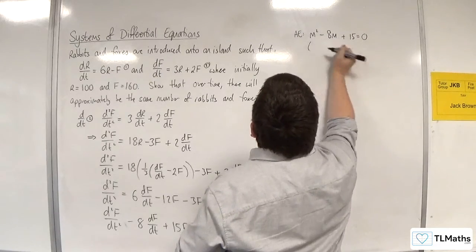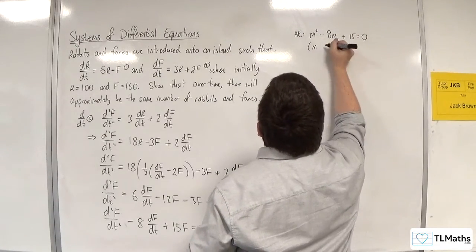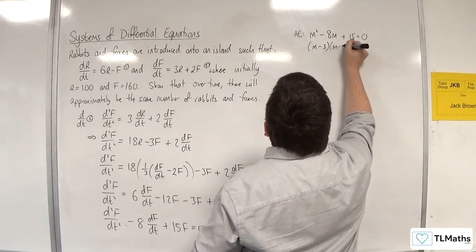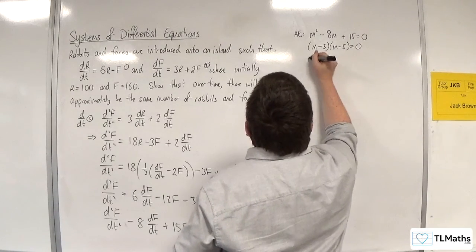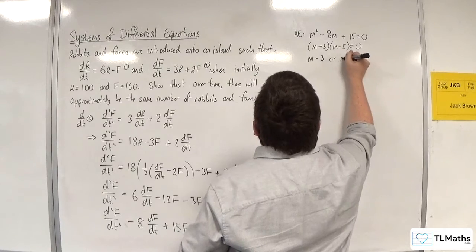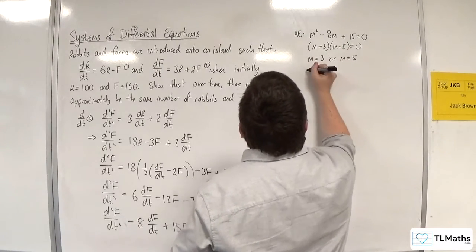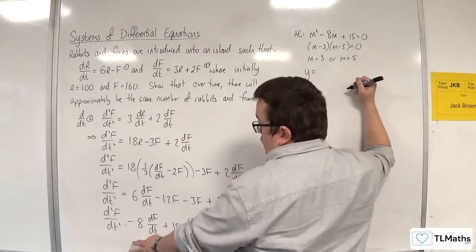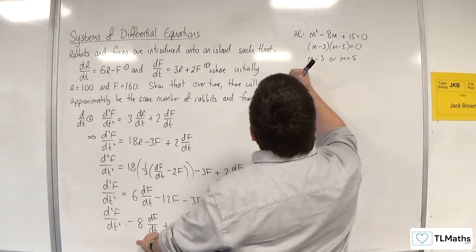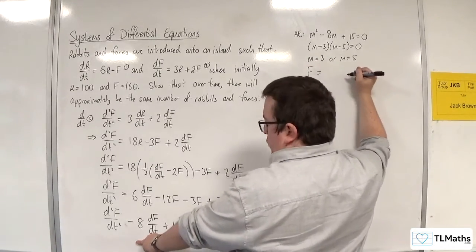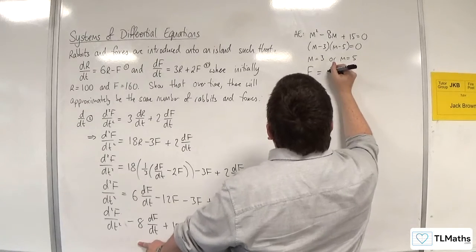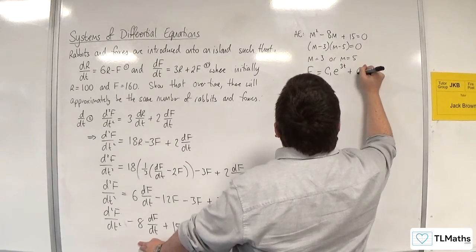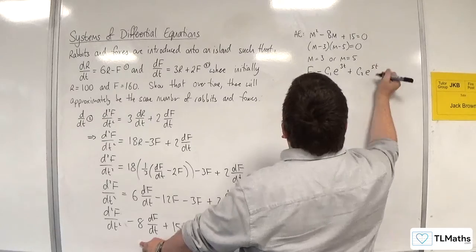The auxiliary equation factorises as (m - 3)(m - 5) = 0, giving m = 3 or m = 5. So the general solution is f = c₁e^(3t) + c₂e^(5t).